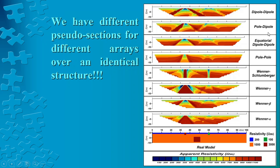I just wanted to show you that even when the model is not very complicated, we can have very diverse responses by different arrays.